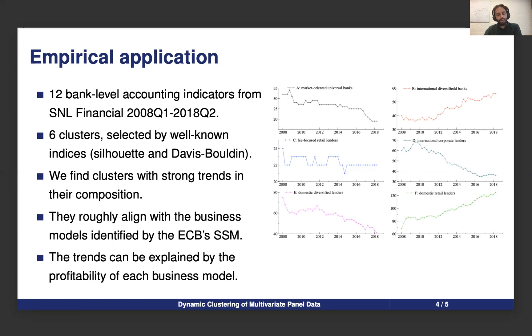We can also explain the trends in the transitions by adding a profitability covariate to our transition probabilities. When we do that, we find that the banks switch more often from business models that have a low profitability to those with a high profitability.